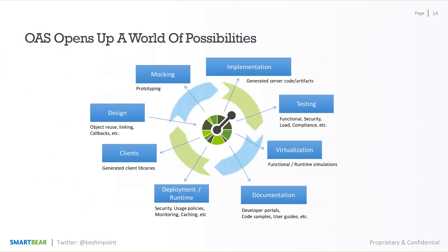The OpenAPI specification, once you define your API and have a definition in place, opens up a world of possibilities. From the definition you can go all the way from designing the interface, to implementing the API's back end, to virtualizing the API, checking the API for quality, creating documentation, and finally deploying it to the right runtime environment for your end consumers to find and consume. The specification — the definition, the contract — allows you to do all of these things.